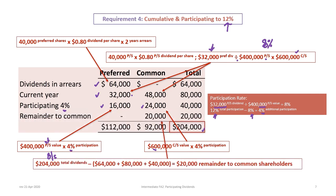The total dividends of $204,000 minus $64,000 arrears, minus $80,000 combined current year preferred and participating common, minus the $40,000 additional 4% participation leaves a remainder of $20,000. There is no more participation because they maxed out at 12%, so all $20,000 is allocated to the common shareholders.